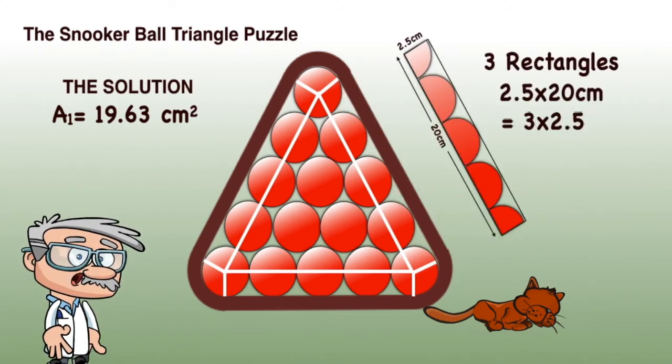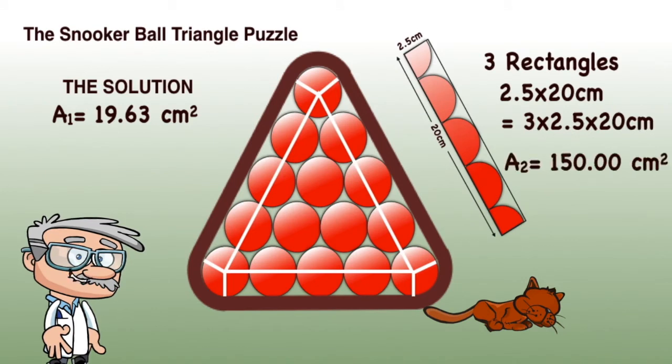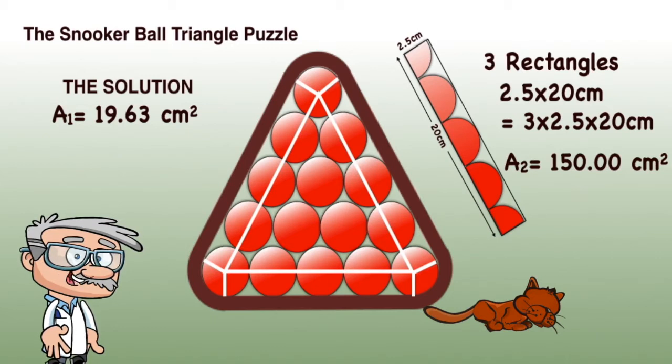The next shapes to consider are the three rectangles outside the inner triangle. Each is 2.5 by 20 centimeters. So the total area is three times 2.5 times 20 centimeters.